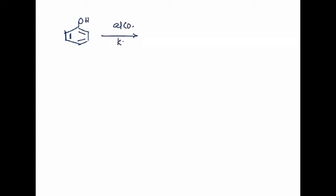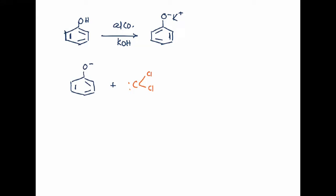The reaction runs in alcoholic KOH, which is basic medium. Phenol is acidic, so first there is formation of potassium phenoxide. The potassium phenoxide then reacts with dichlorocarbene. The negative charge on oxygen gives more electron density to benzene. O-negative is an ortho/para-directing group, so electron density goes to the ortho and para positions.